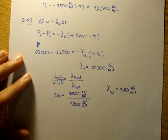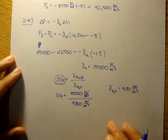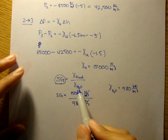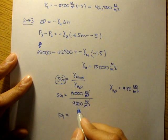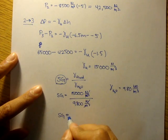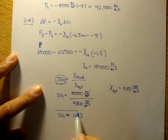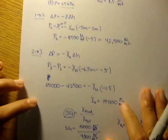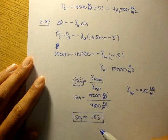You see the units actually cancel out, so our specific gravity is just a ratio—the ratio of the fluid we're studying to water. Finally, you divide 15,000 by 9,800, I get about 1.53. So the specific gravity of this unknown liquid is 1.53.